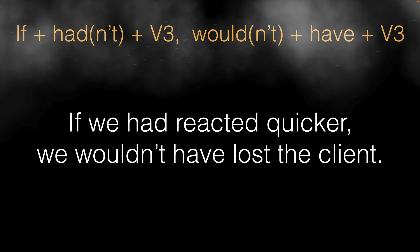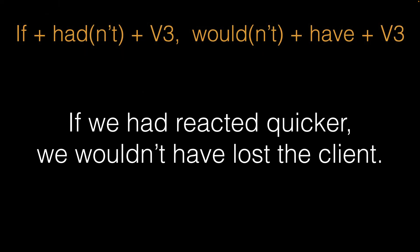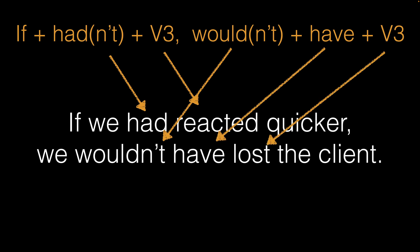Let's look at some examples and how we make the third conditional. We need 'if' and 'had' or 'hadn't' plus a third form of the verb or past participle, then 'would' or 'wouldn't have' plus verb three.